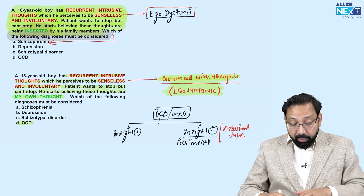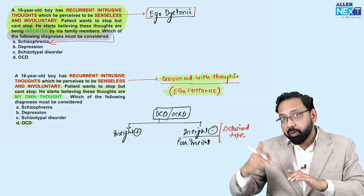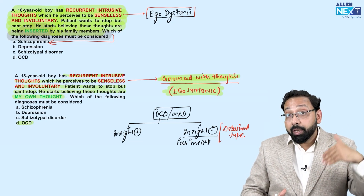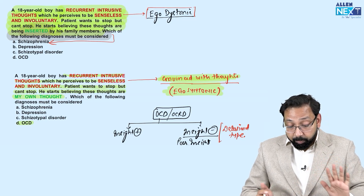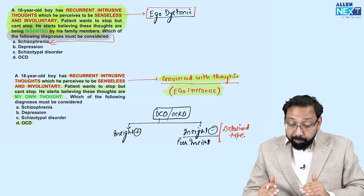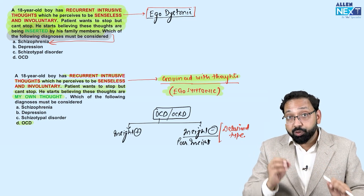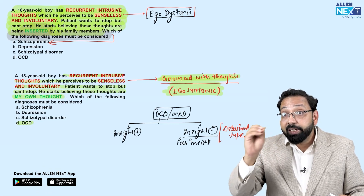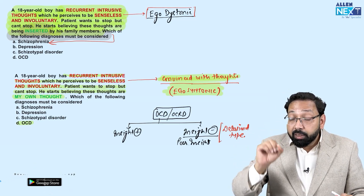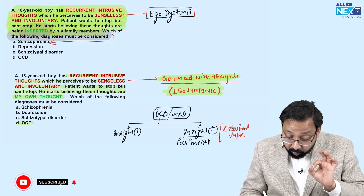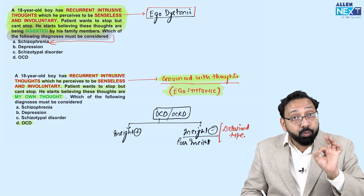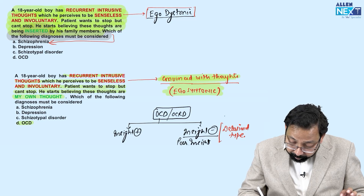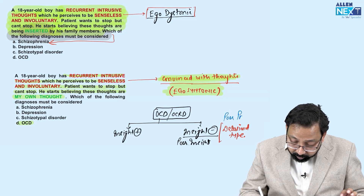This is specifically relevant for higher-level exams like MLE, and has also been asked in AIIMS. If insight is poor or absent in OCRD, the prognosis is poor. Poor insight equals poor prognosis.